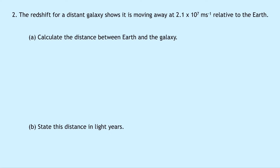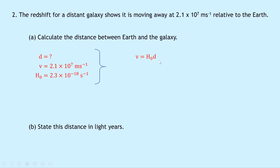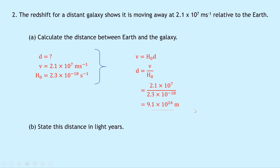Question 2 says that the redshift for a distant galaxy shows it's moving away at 2.1 times 10 to the 7 meters per second relative to the Earth. Part A says to calculate the distance between Earth and the galaxy. Writing down what we know: we're trying to find d. The recessional velocity v is 2.1 times 10 to the 7 meters per second and Hubble's constant is 2.3 times 10 to the minus 18 per second. Rearranging Hubble's law, d equals v over H₀, and substituting gives 2.1 times 10 to the 7 over 2.3 times 10 to the minus 18, which equals 9.1 times 10 to the 24 meters.